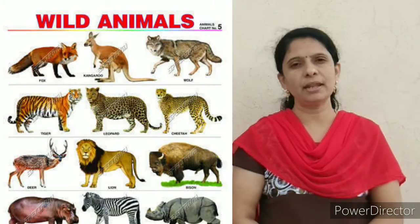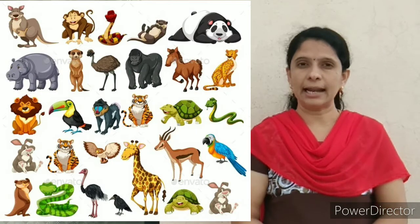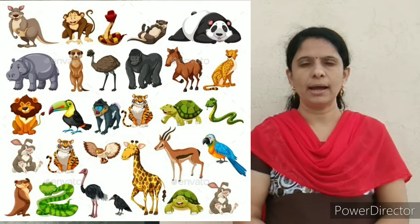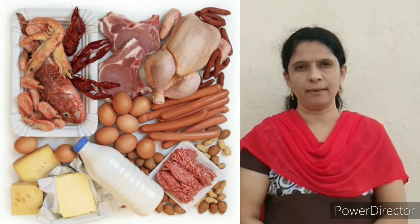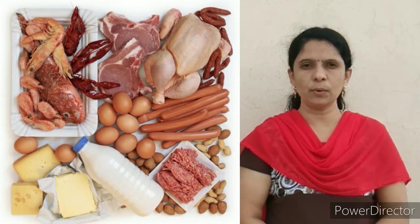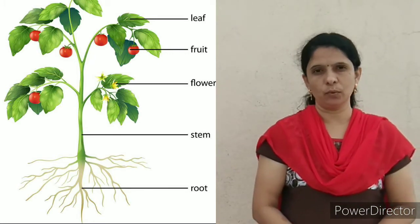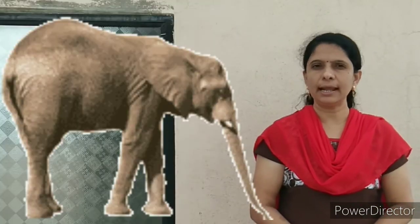Children, we always see various types of animals around us. Animals are living things and they need food to grow and survive. Food gives energy for their growth and to stay healthy. Plants can make their own food, but animals cannot make their own food — they depend on plants and other animals.